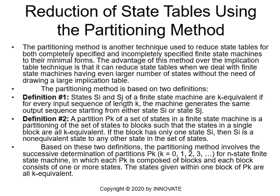The partitioning method is based on two definitions. Definition one: states Si and Sj of a finite state machine are k-equivalent if for every input sequence of length k, the machine generates the same output sequence starting from either state Si or state Sj. Definition two: a partition Pk of a set of states in a finite state machine is a partitioning of this set of states into blocks such that the states in a single block are all k-equivalent. If a block has only one state Si, then Si is inequivalent to any other state in the set.